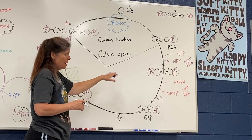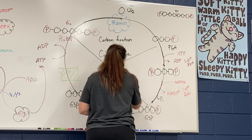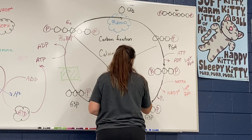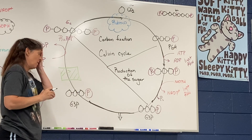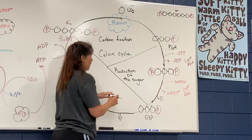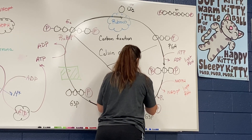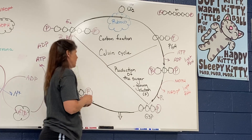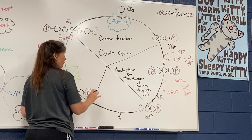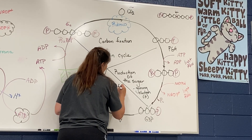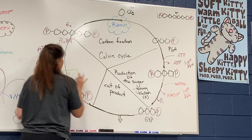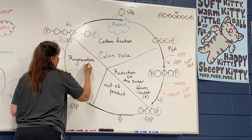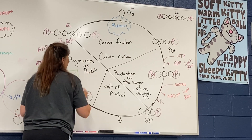The second part is called the reduction of the sugar. Remember OIL RIG: oxidation is loss, reduction is gain. What are we doing? We are gaining our electron — and of course that electron comes in the form of hydrogen. Then some folks include a third phase, which I like, called exit of product. And then the last phase is the regeneration of RuBP.